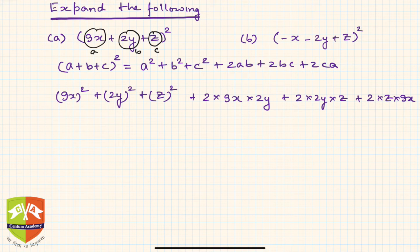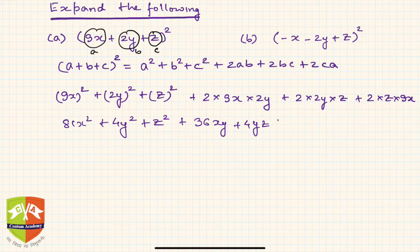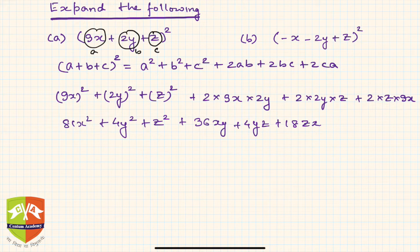Simplifying: 9² gives 81, so we get 81x² + 4y² + z² + 36xy + 4yz + 18zx. This is what the expansion looks like. Always take care that all same-power terms are clubbed together.